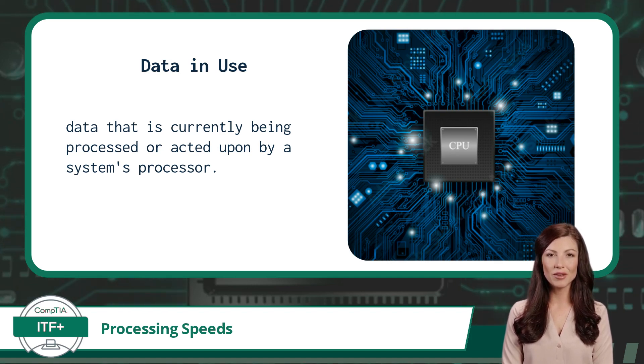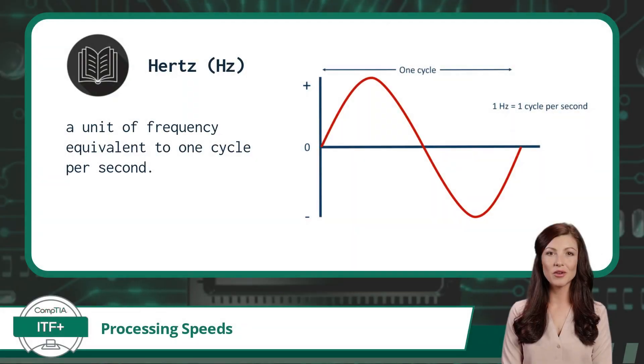The processor's speed measurement used to express cycles per second is hertz. A hertz is a unit of frequency equivalent to one cycle per second.